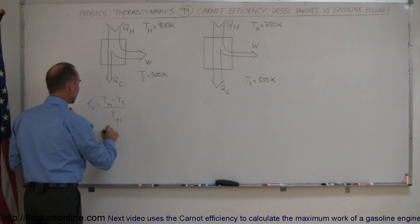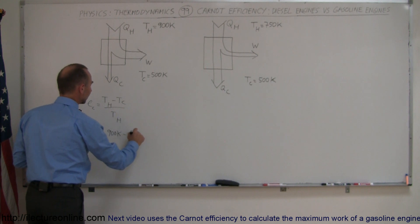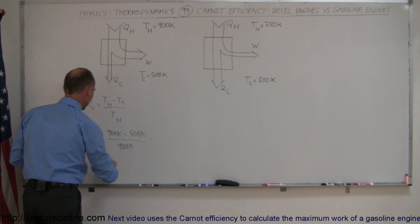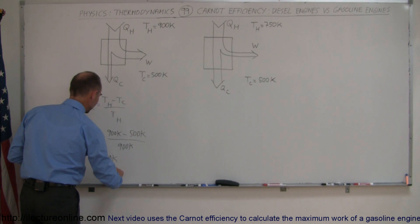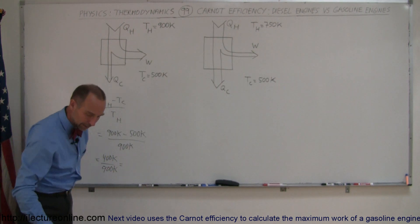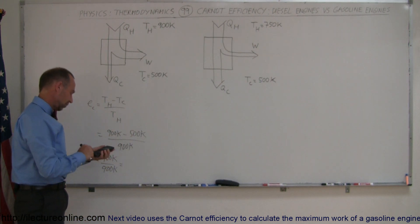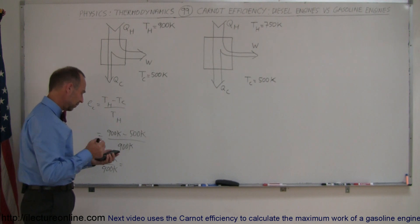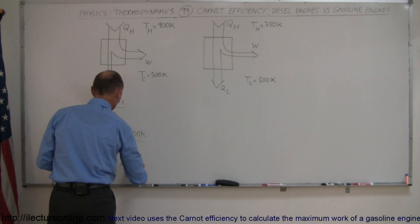For the diesel engine, that would be 900 Kelvin minus 500 Kelvin, divided by 900 Kelvin. That would be equal to 400 Kelvin divided by 900 Kelvin, which is 4 divided by 9. So 4 divided by 9 equals 44.4%.